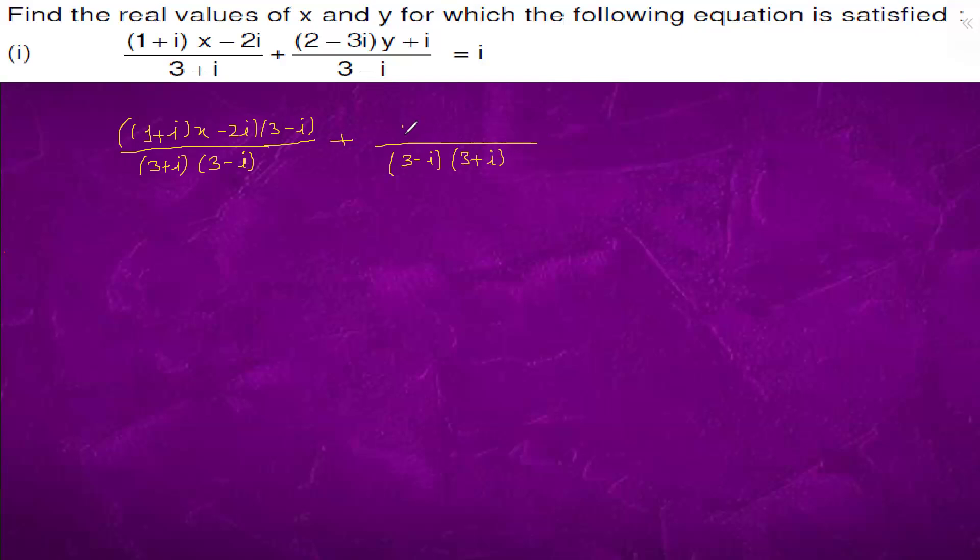And here we have 2 minus 3 iota y plus iota into 3 plus iota. And here we have equals 2 iota.